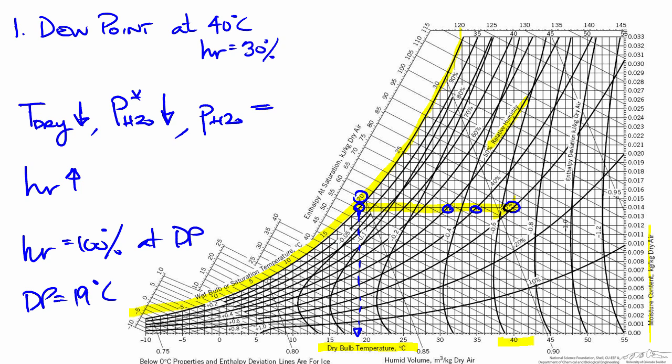The dew point represents the point at which liquid will first start to form. If we continue to lower the temperature, we would move along the saturation curve, continuing to condense water. As we move down along the saturation curve, we are also lowering the moisture content as that water condenses.